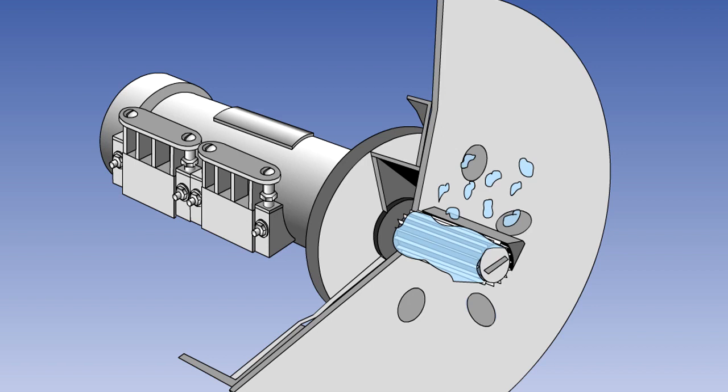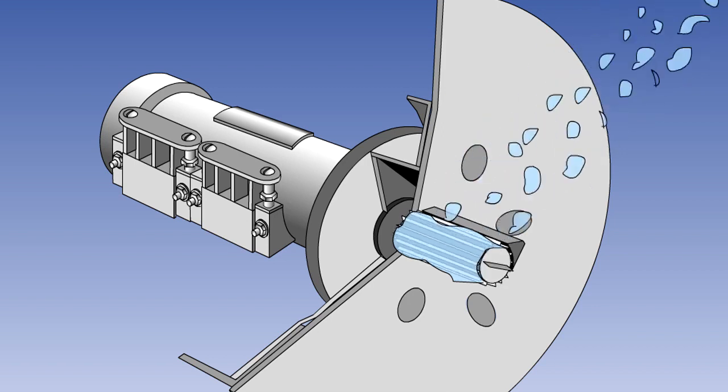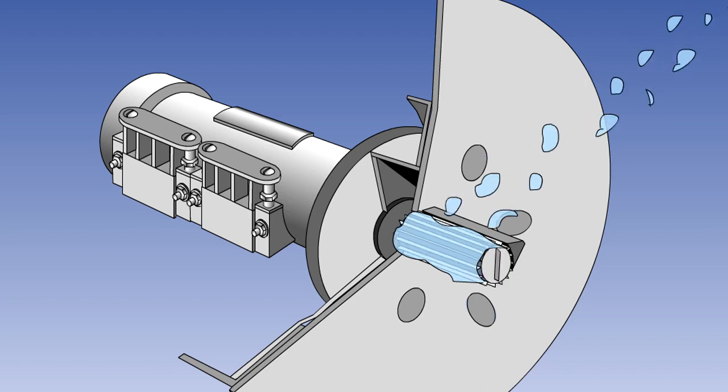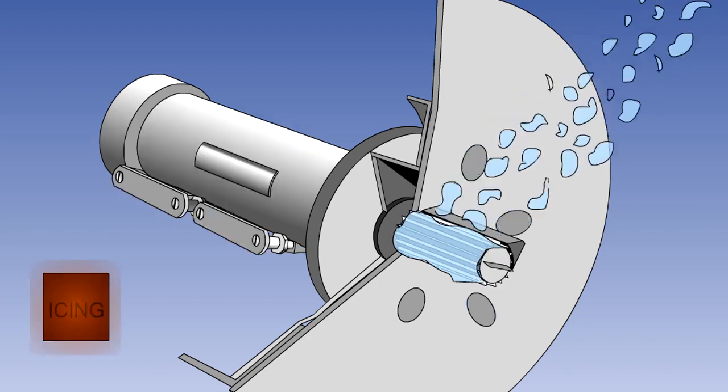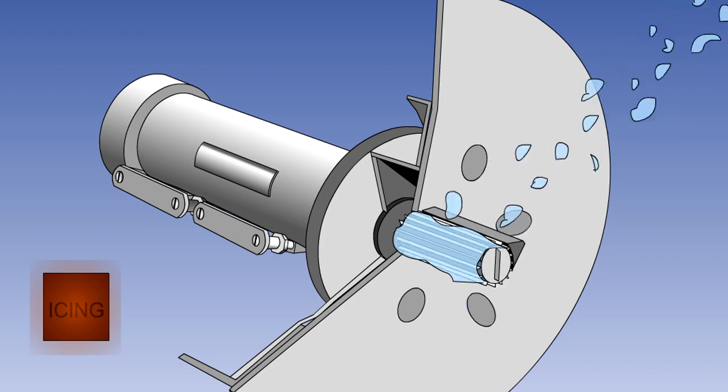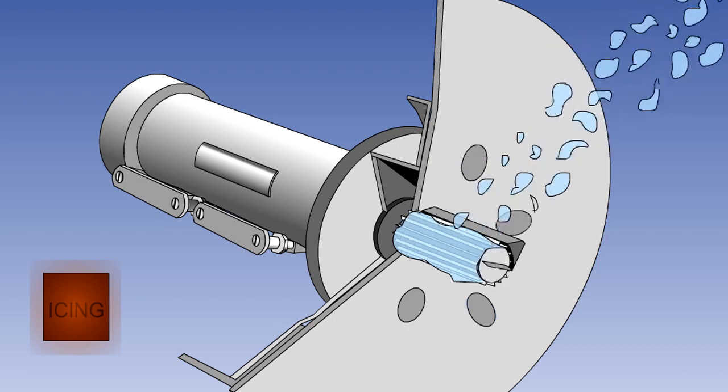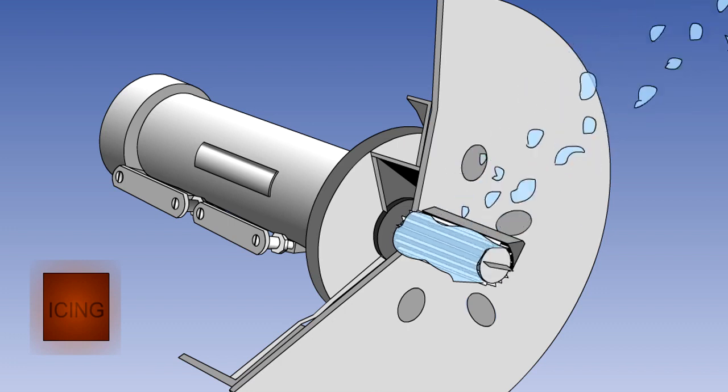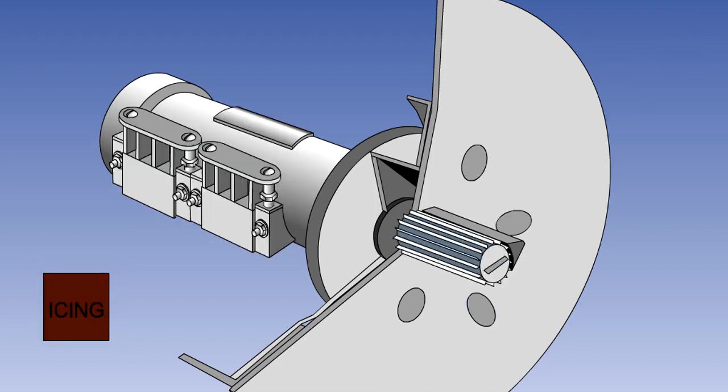In icing conditions, ice builds up on the rotor, and is shaved off by the cutter. Shaving off the ice requires greater rotational torque, and causes the motor to rotate slightly in its flexible mountings. This movement operates a micro-switch, which gives an ice warning. The warning remains, as long as ice continues to foul the cutter blade.